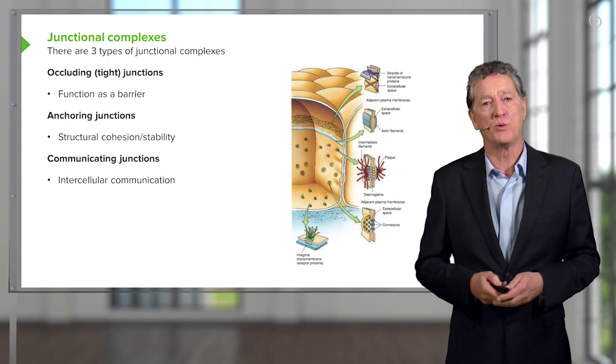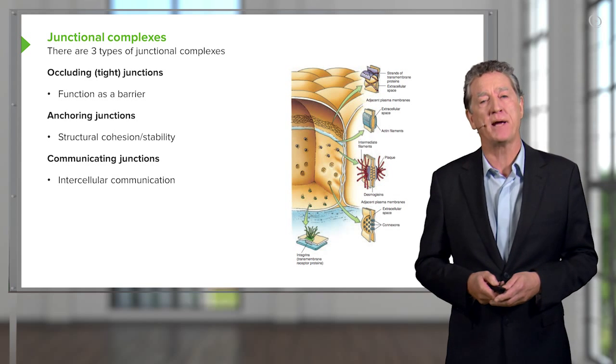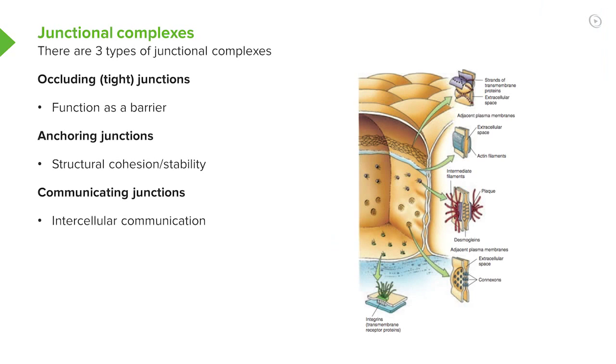The first junctional complex is at the very apex of the cell, and they're called occluding or tight junctions. They're a barrier. They prevent material passing between the cells.